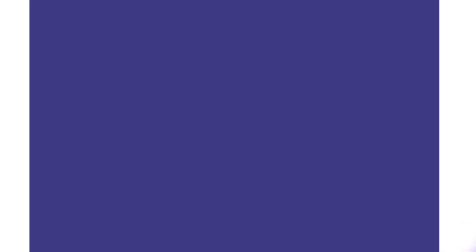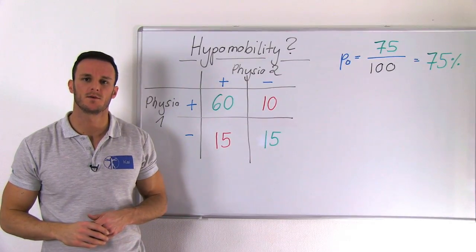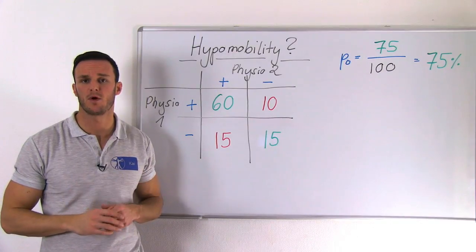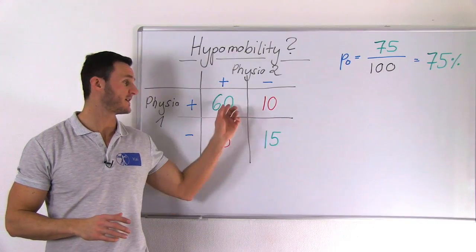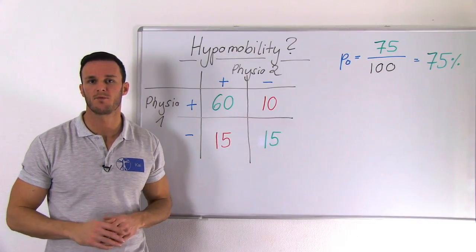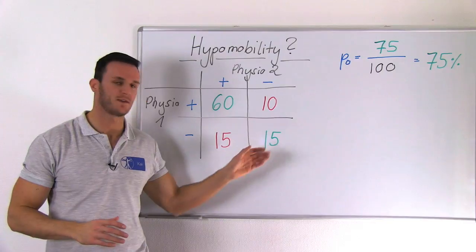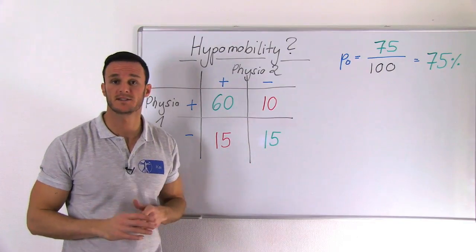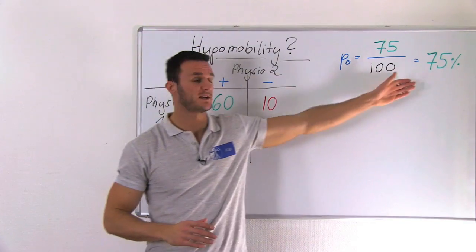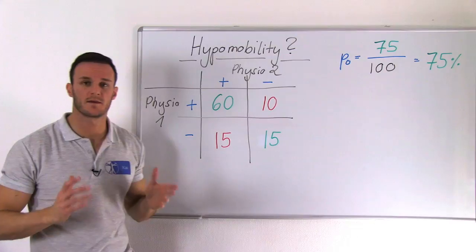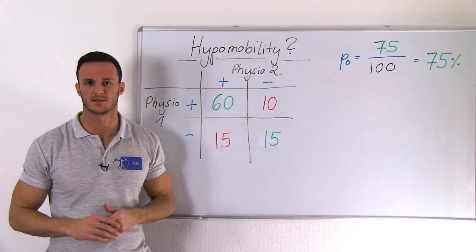For example, imagine that two physiotherapists are evaluating the lumbar vertebrae L5 on hypomobility in 100 patients. Physio 1 and Physio 2 agree that patients are hypomobile in 60 cases and not hypomobile in 15 cases, so they would have 75% agreement, and in the other cases they have different opinions.